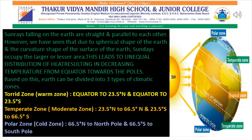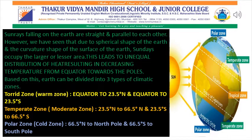We can conclude that sun rays falling on the Earth are straight and parallel to each other. However, due to the spherical shape of the Earth and the resultant curvature of its surface, they occupy a larger or lesser area. This leads to the unequal distribution of heat received from the Sun, resulting in decreasing temperature from the equator to the north and south poles. Based on the distribution of temperature, the Earth can be divided into torrid, temperate, and polar regions. The torrid region, where there is extreme heat, extends from the Tropic of Cancer to the Tropic of Capricorn — 23.5 degrees north to 23.5 degrees south.